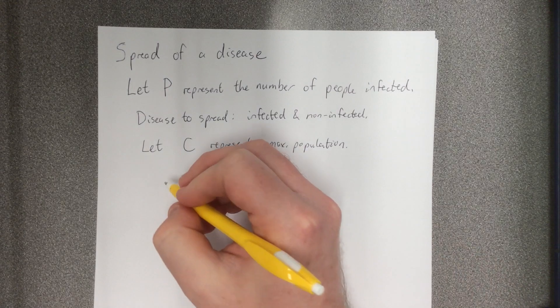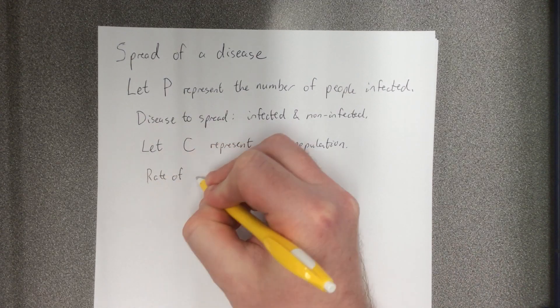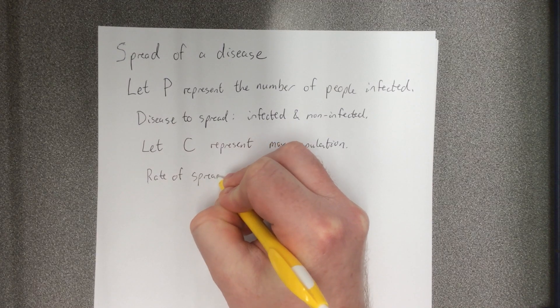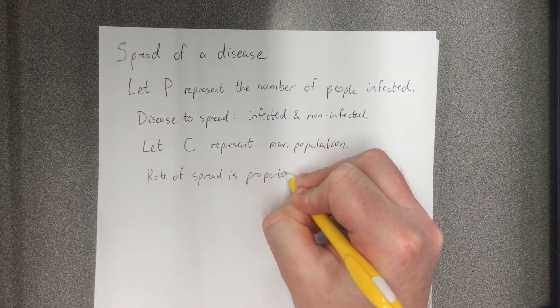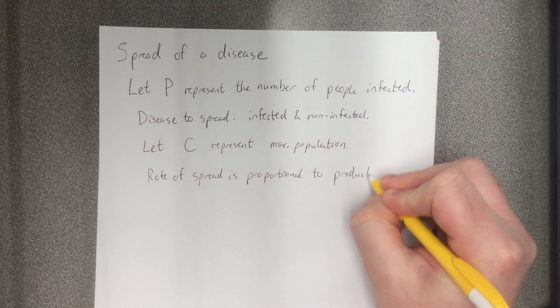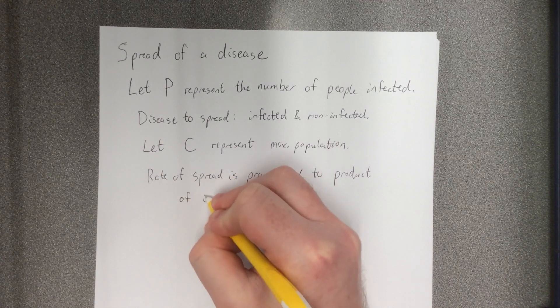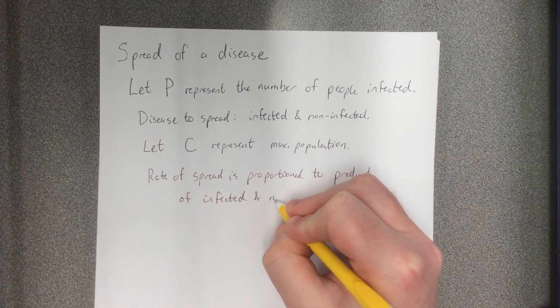That means that the rate at which it spreads is going to be proportional to the product of those that are infected and those that are not infected.